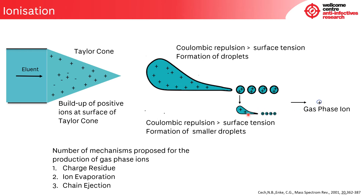The exact process by which ions enter the gas phase is still a matter of debate. There have been a number of mechanisms proposed for the production of gas phase ions, including the charge residue, ion evaporation, and chain ejection models. For the small molecules that we generally look at in DMPK and medicinal chemistry, it's believed that the ion evaporation model best explains the process by which gas phase ions are formed.